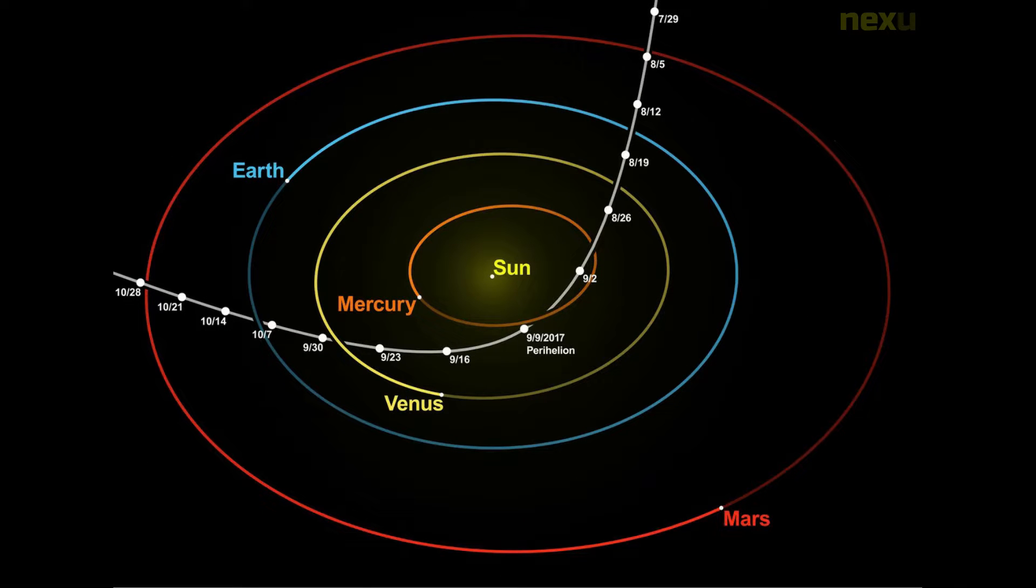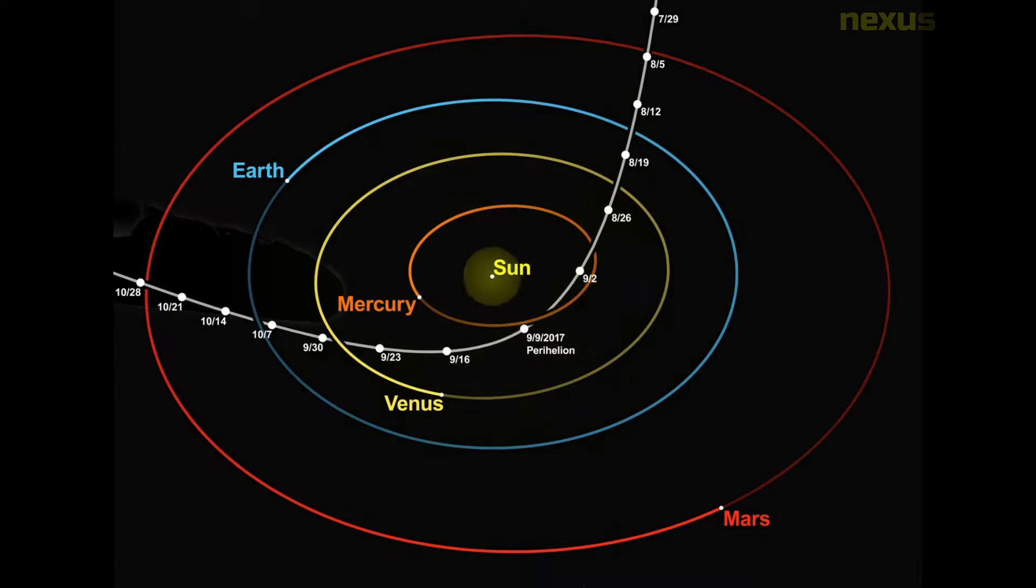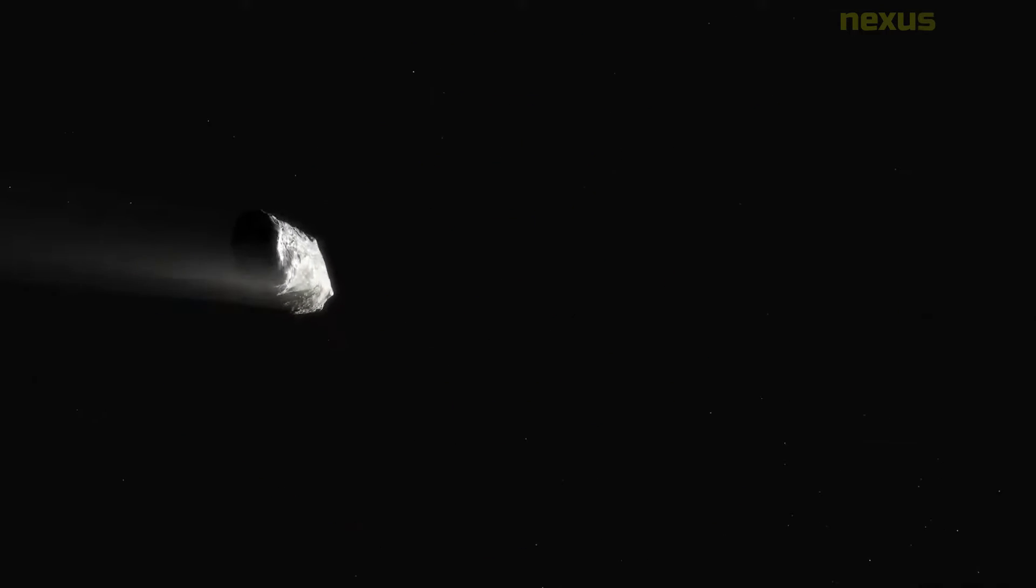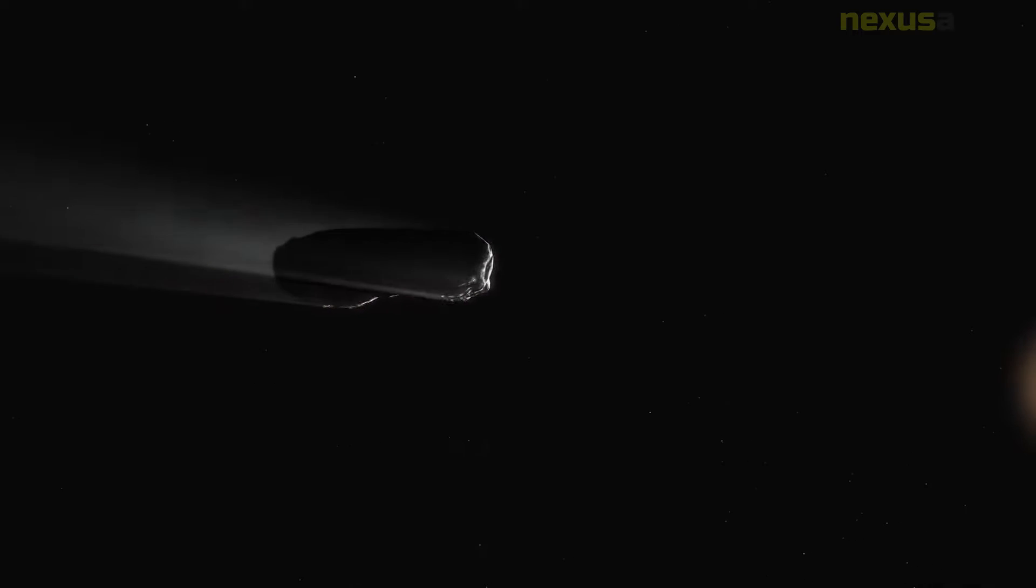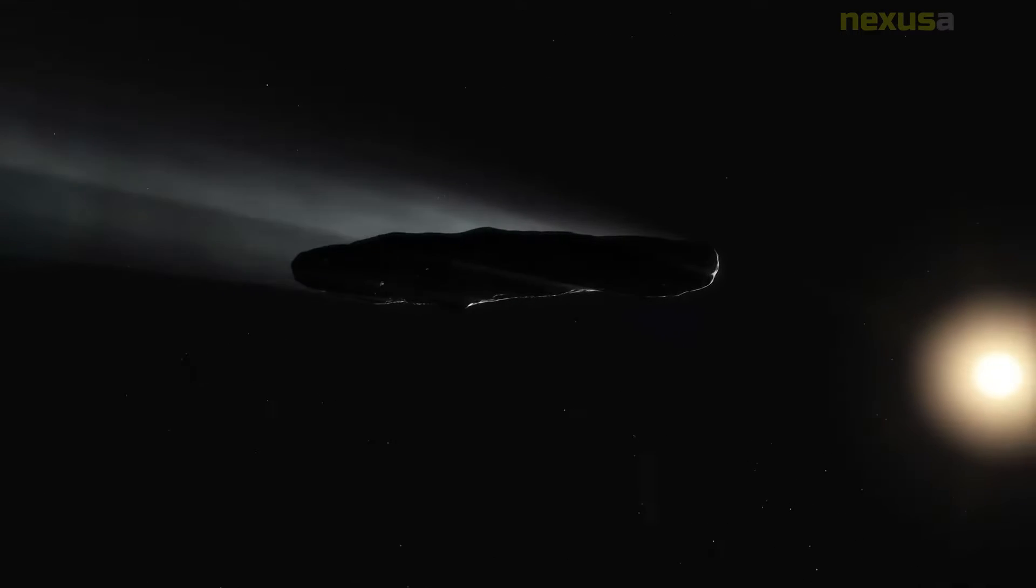The sun's gravity bent its orbit in a sharp turn northward at its closest approach on the 9th of September at a distance of 0.255 AU from the sun, about 17% closer than Mercury's closest approach to the sun.